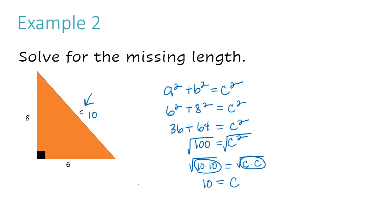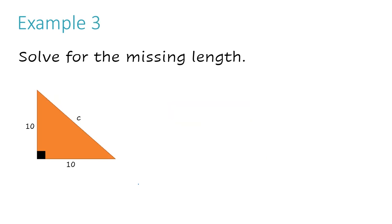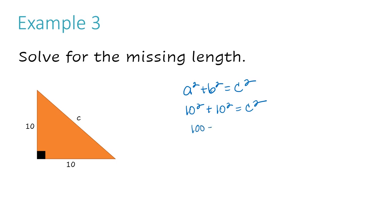Let's take a look at example number three: solve for the missing length. This one might seem easy because we have a nice number like 10 twice for both legs, but let's see how it turns out. A and B are both 10 because both legs have a value of 10. Starting with the formula: a² + b² = c², so 10 squared plus 10 squared equals C squared. 10 times 10 is 100, plus 100 is 200, equals C squared.